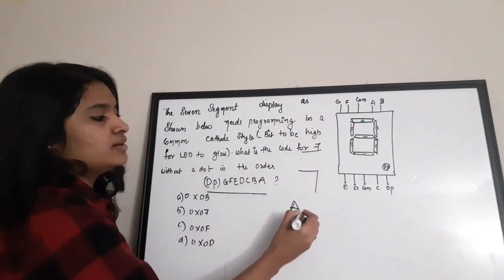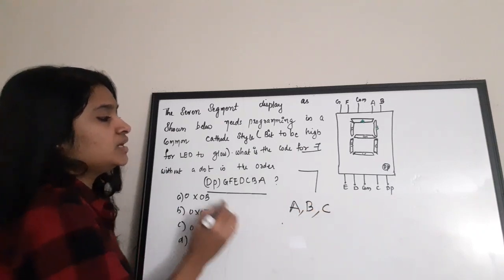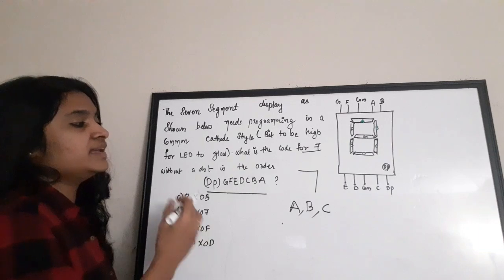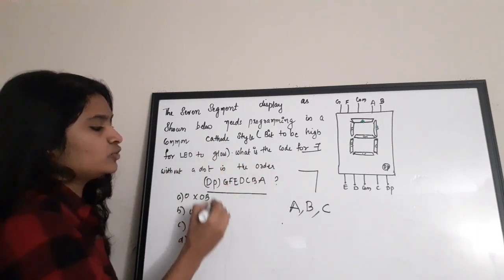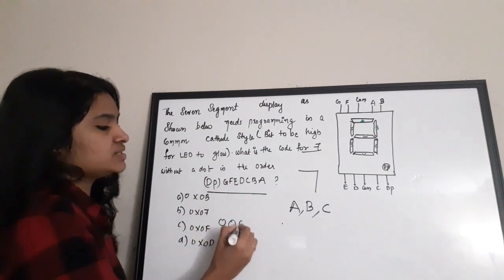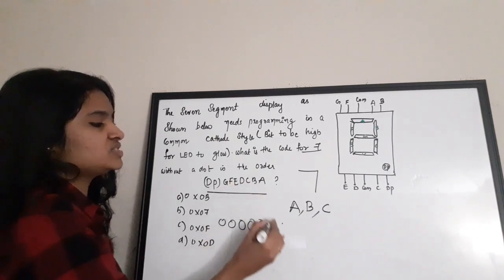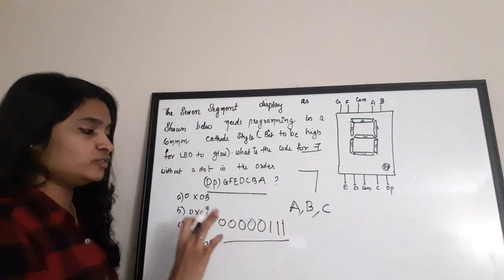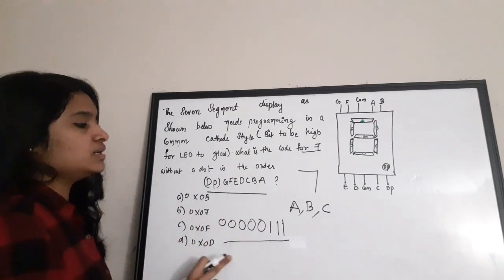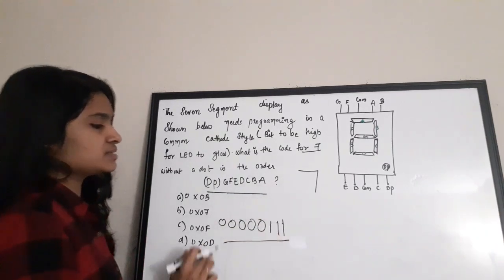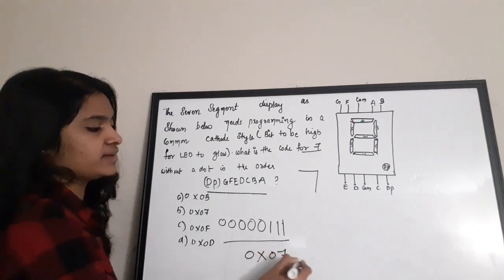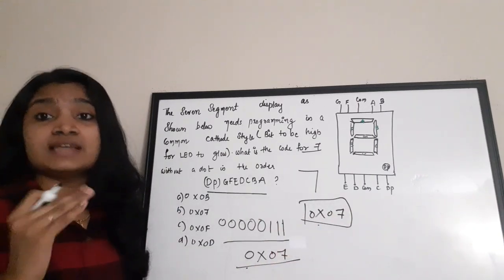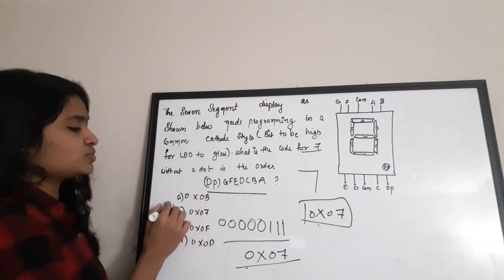We need a one at a, one at b, and one at c. In the bit order given — dp, g, f, e, d, c, b, a — the input values are: dp=0, g=0, f=0, e=0, d=0, c=1, b=1, a=1. This corresponds to hex value 0x07. That is the input we give to the 7-segment display to produce a '7'.